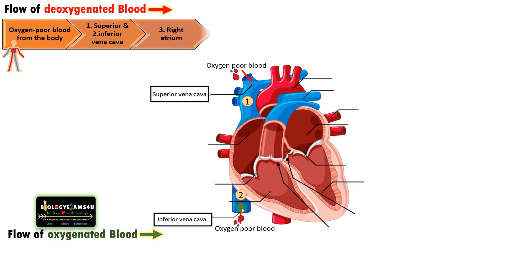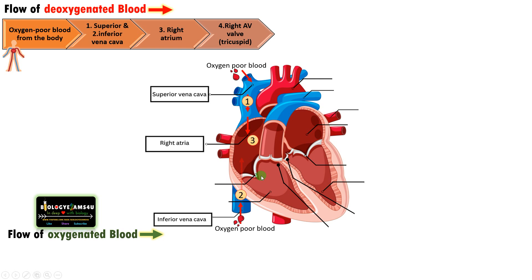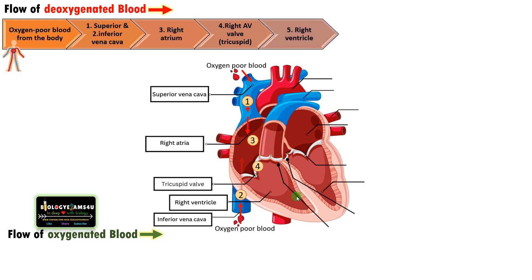Then the blood moves into the right atrium, one of the chambers of the heart. Then through this tricuspid valve, blood moves into the right ventricle. This tricuspid valve regulates blood flow and also prevents the back flow of blood from the right ventricle into the right atria.